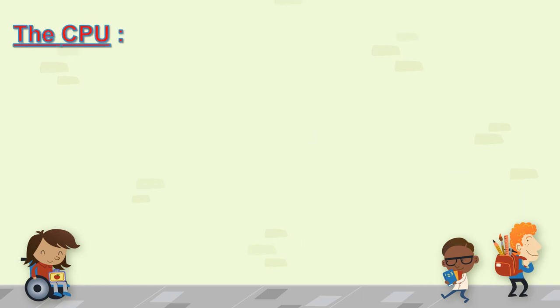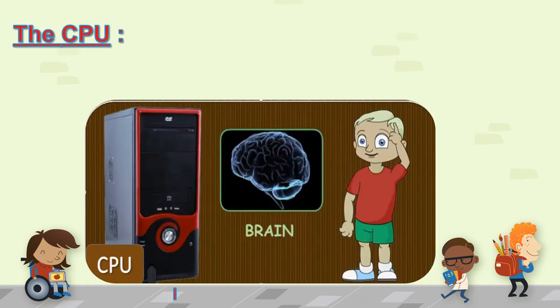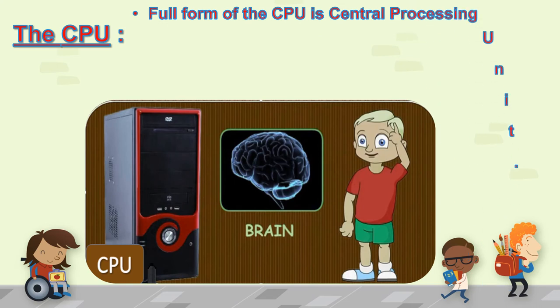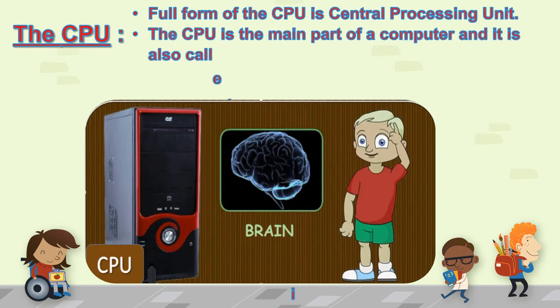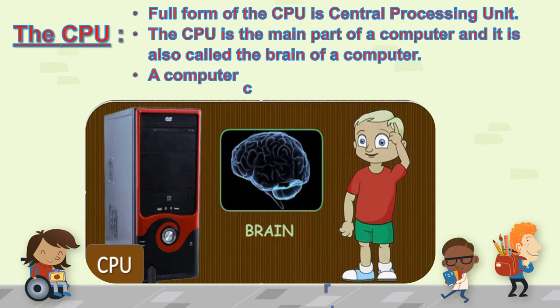The CPU. Full form of the CPU is central processing unit. The CPU is the main part of a computer and it is also called the brain of a computer. A computer cannot work without the CPU.